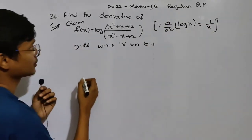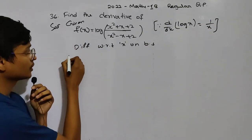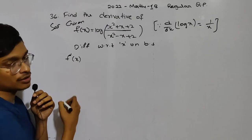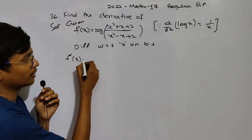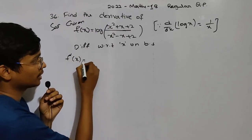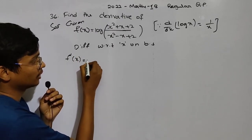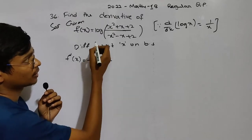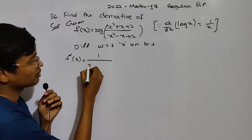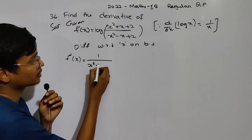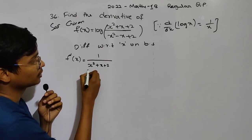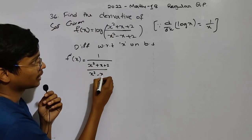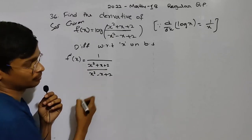We can write the formula 1 by x. That's how we write. So, f dash of x — we can write the derivative of x. This equals the derivative: 1 by x times (x squared plus x plus 2) by (x squared minus x plus 2).